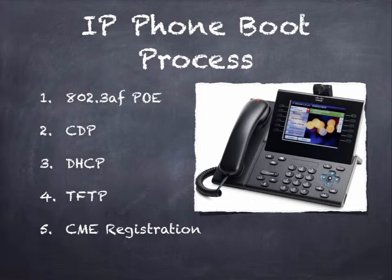The TFTP server will look that up, and if it has that phone file, it will reply with the settings for the phone. The configuration file will contain an IP address of where the call manager is located. So in step five, the phone will reach out to that call manager in an attempt to register. Once registered, the phone will have its extension and be ready to send and receive calls. That's essentially the five-step abbreviated process.